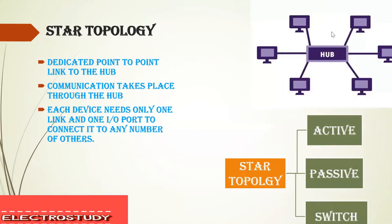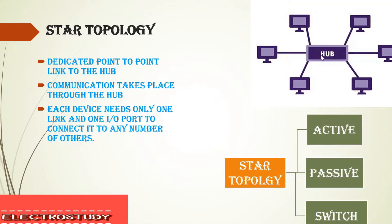Star topology. Here, star topology is a dedicated point-to-point link to the hub. In mesh, communication takes place between each and every node directly. But in star topology, the nodes are connected to a central hub which is the central core. The communication between nodes is not directly done — the data from one node is sent through the hub, and the hub reroutes that data to the destination node.